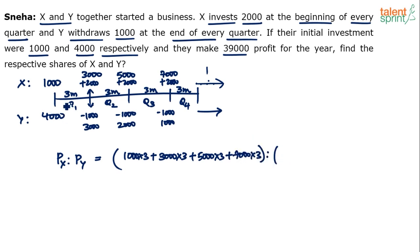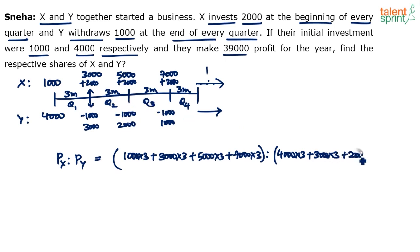For Y's investment: 4,000 × 3 for the first three months, plus 3,000 × 3 for the second quarter, plus 2,000 × 3 for the third quarter, plus 1,000 × 3 for the last quarter. That's it — do the calculation, get the ratio, and divide 39,000 in that ratio.